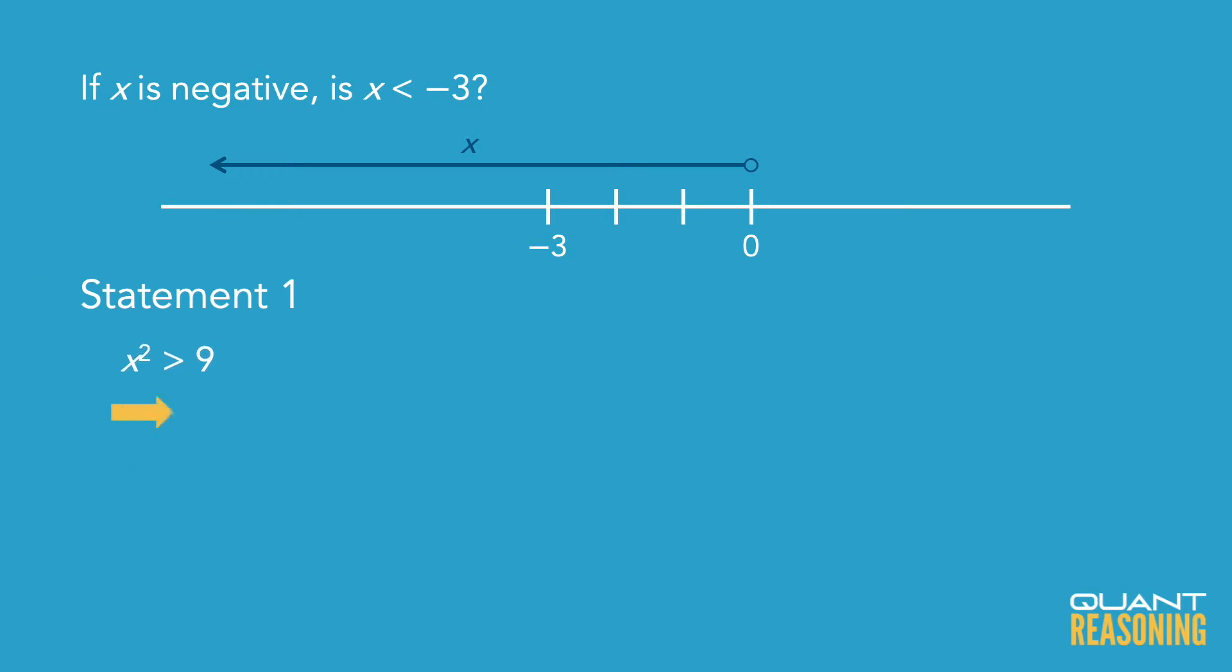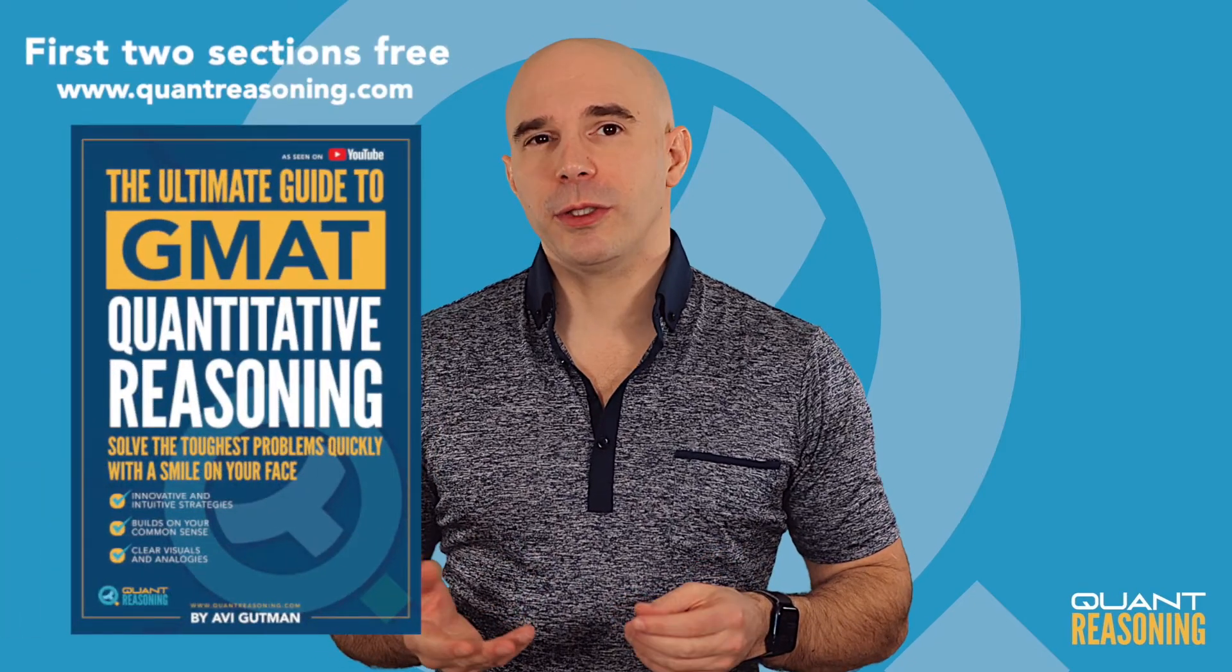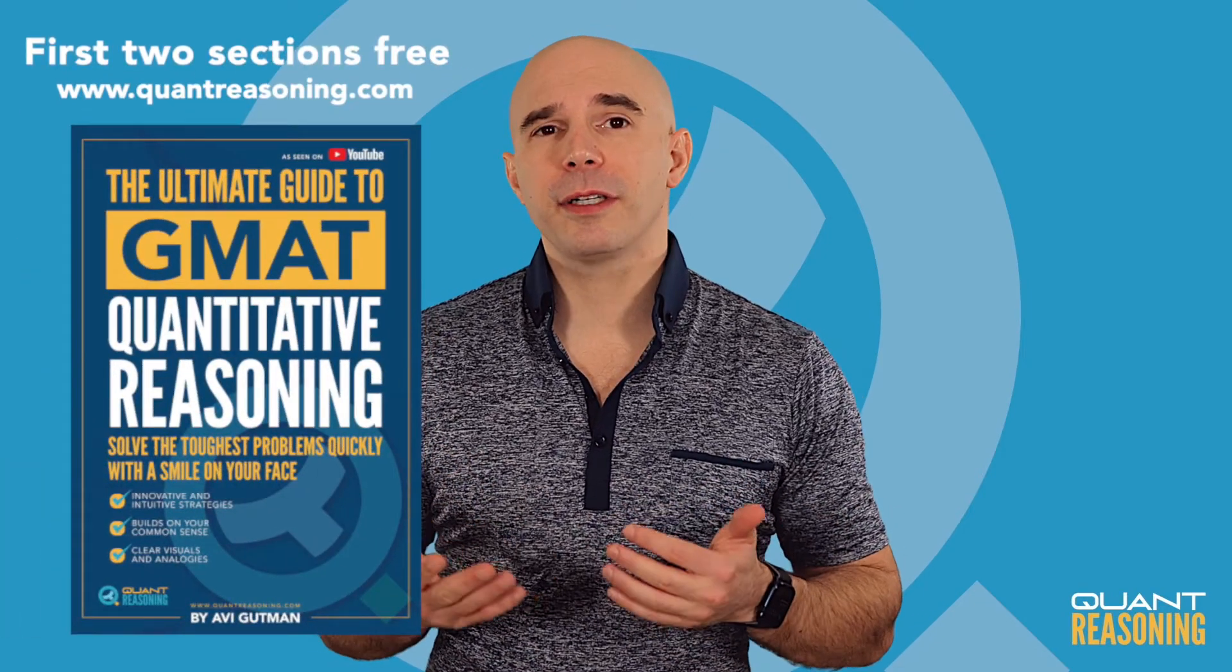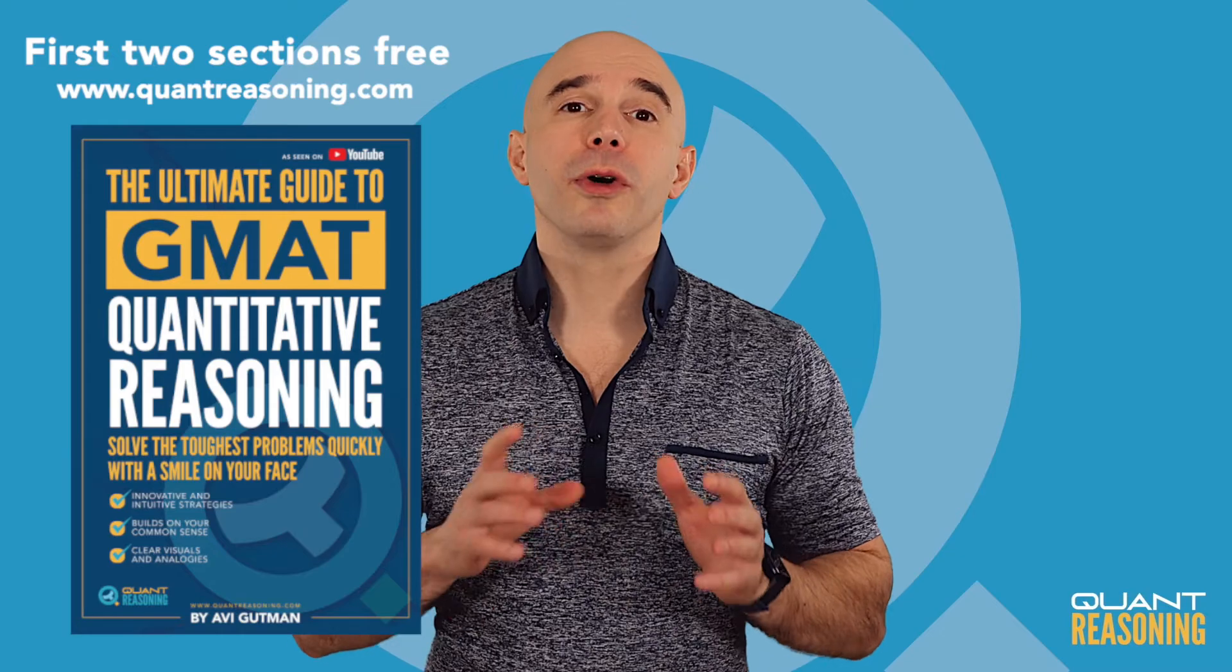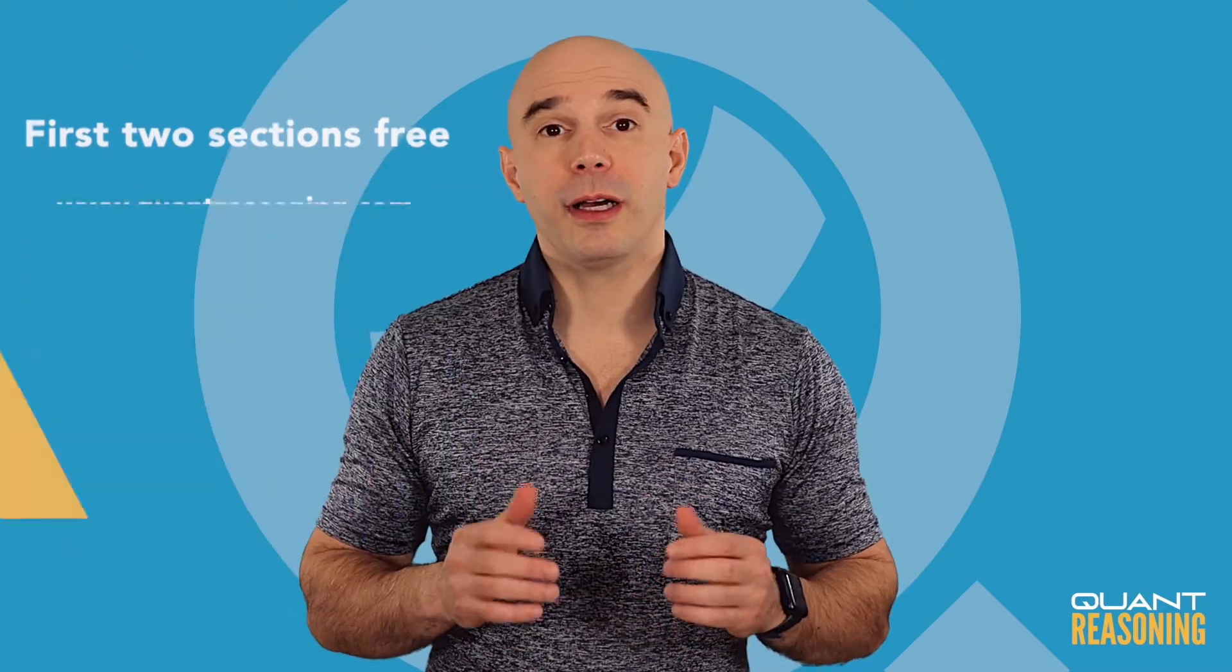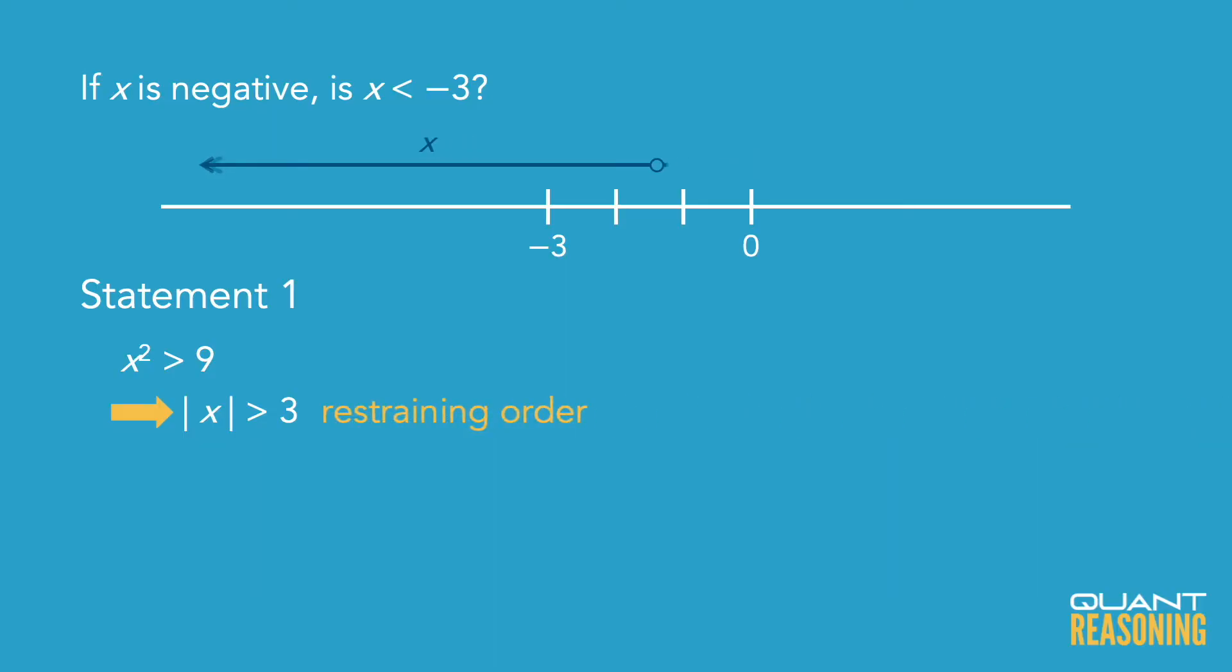But what would that mean for x? The way to do this is to take the square root of both sides and put an absolute value around the x because we don't know which side of 0 it all started from. And then we'd say that the absolute value of x is greater than 3, and in my book I call that a restraining order situation where we pretend that x is some kind of criminal who has to be more than 3 units away from 0 at all times. So x is either greater than 3 or less than negative 3.